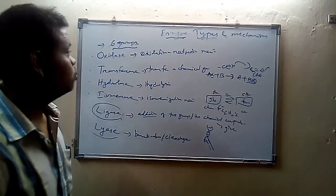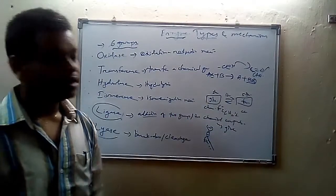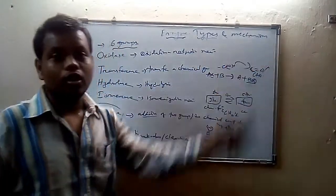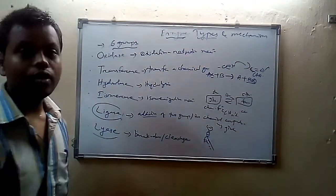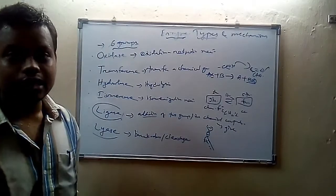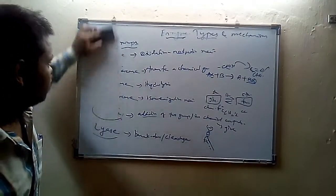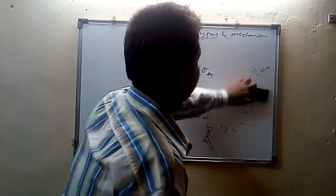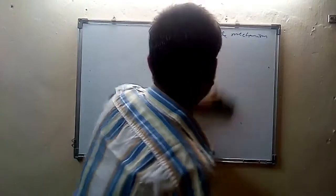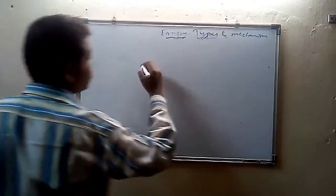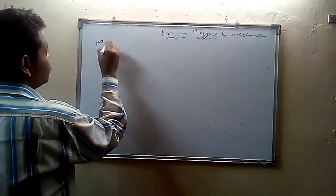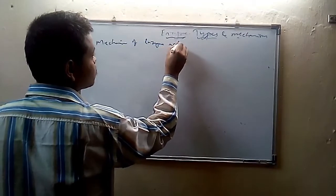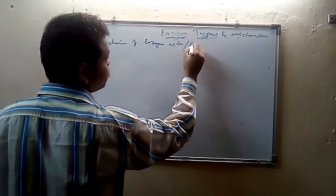So these are the different groups or classification of enzymes according to their function: oxidase, transferase, hydrolase, isomerase, lyase, and ligase. The classification of types is complete. Then we will discuss the mechanism of enzyme action.